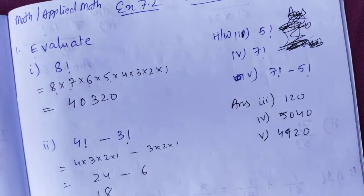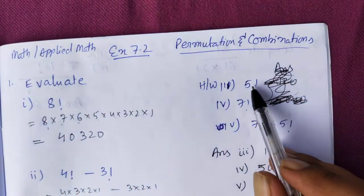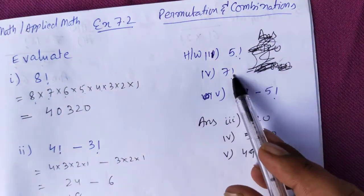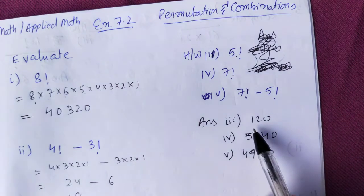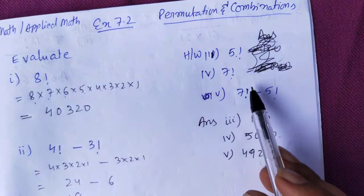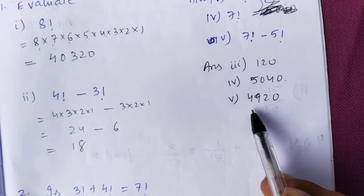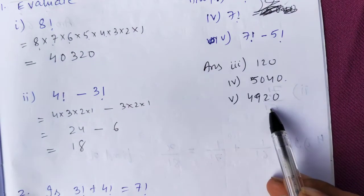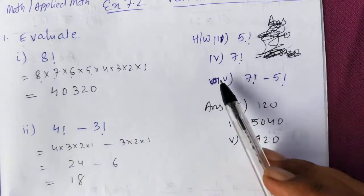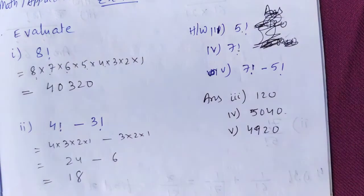As homework: 5! should give 120, 7! should give 5040, and 7! − 5! you should calculate yourself using the same method.